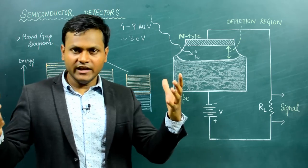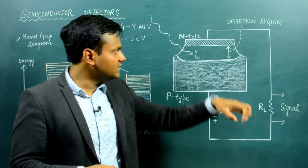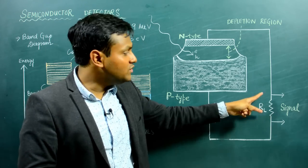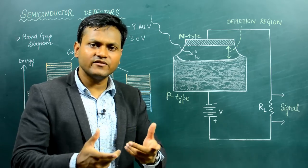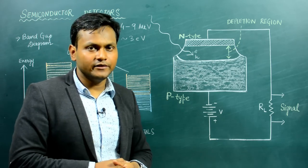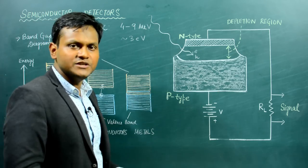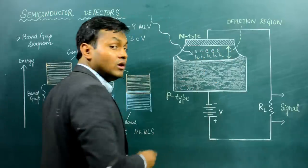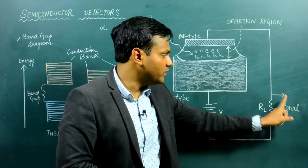When an alpha particle, gamma radiation, or some other nuclear particle enters the depletion layer and creates a large number of electron-hole pairs, these electrons move through the circuit and lead to a potential drop across RL, which is detected through some kind of electronics as a current pulse. The existence of a current pulse across RL is proof of the existence of an external nuclear particle inside the depletion layer. This is the most simple way in which this detector works.